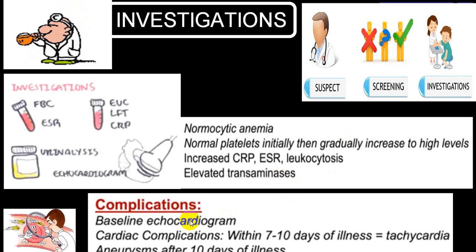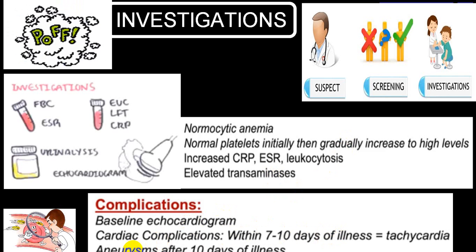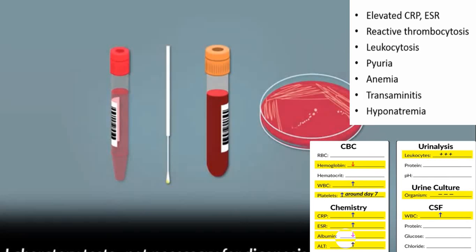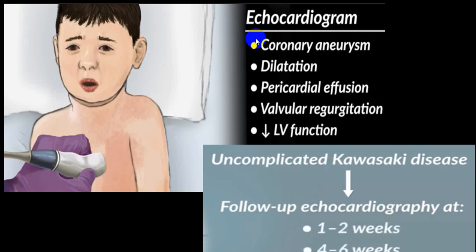Baseline echo should be done and regularly followed up every seven to ten days to find complications, observing for aneurysm after ten days of illness. Laboratory clues include elevated CRP, elevated ESR, thrombocytosis, leukocytosis, pyuria, anemia, elevated ALT, hyponatremia, and hypoproteinemia. Echocardiography is a must — if it shows coronary artery aneurysm or dilatation, pericardial effusion, valvular regurgitation, or decreased LV function, it is a dangerous sign. In uncomplicated Kawasaki, echo should be repeated every one to two weeks, and further up to six weeks.